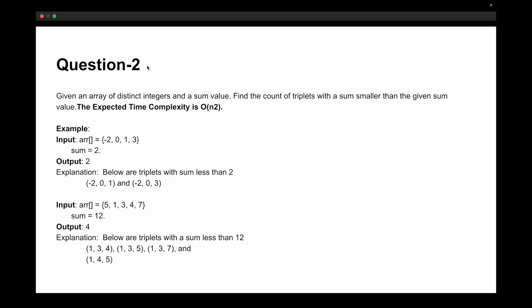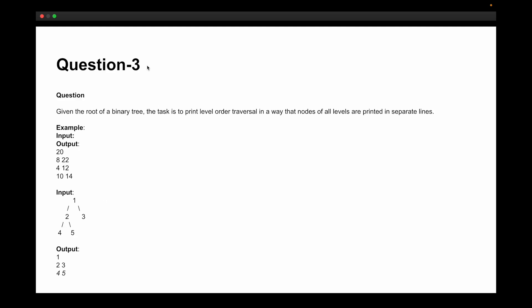The third coding question was: you are given the root of a binary tree and the task is to print a level-order traversal such that nodes of all levels are printed on separate lines. For example, given input nodes 1, 2, 3, 4, 5, the output would be: line one prints 1, line two prints 2 and 3, and line three prints 4 and 5.